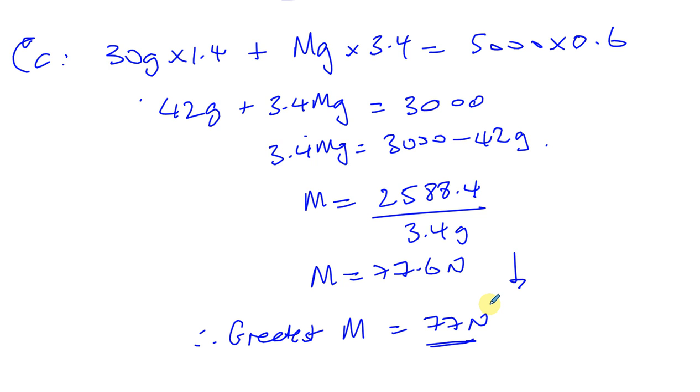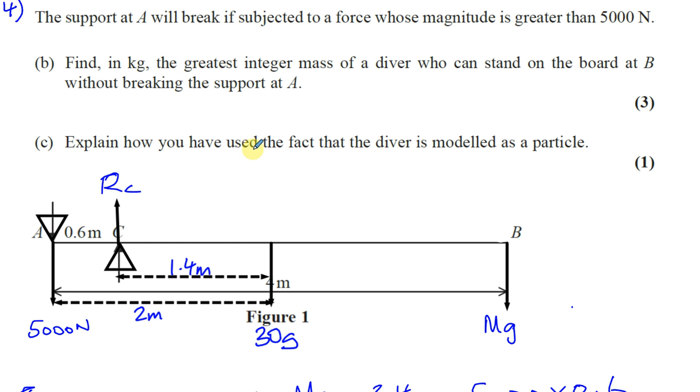And there we have Part B. And then Part C simply states: Explain how we've used the fact that the diver is modeled as a particle. Well, basically, a particle - the weight of the particle acts at one point. So you can say we assumed his weight acted at one particular point. His weight acts at one point, which was B. Not in an area, but at a point. That's how we assumed, or how we used the fact that we modeled him as a particle. Okay, so there we have the answer for 4, B, and C.